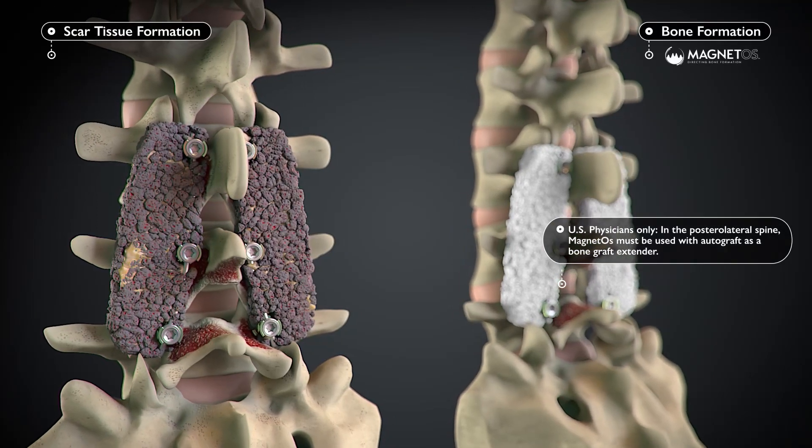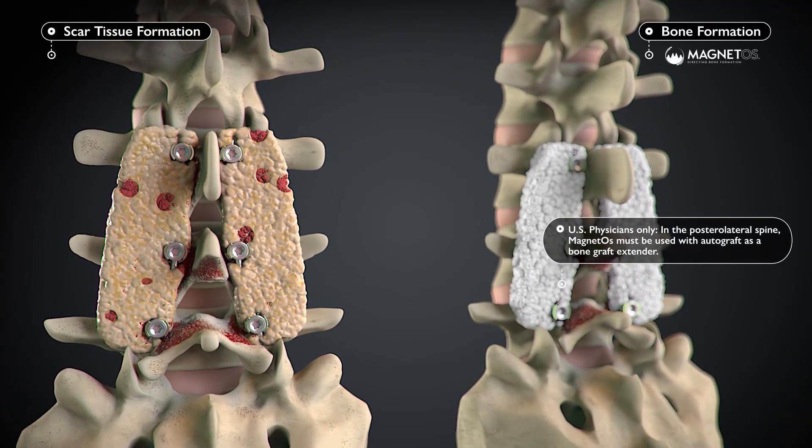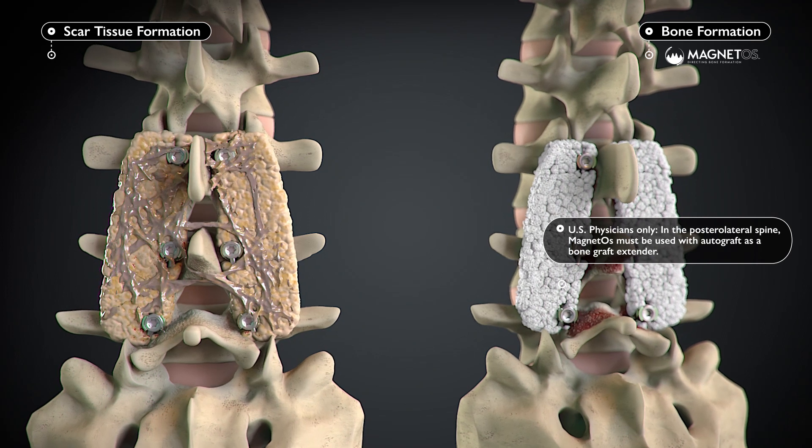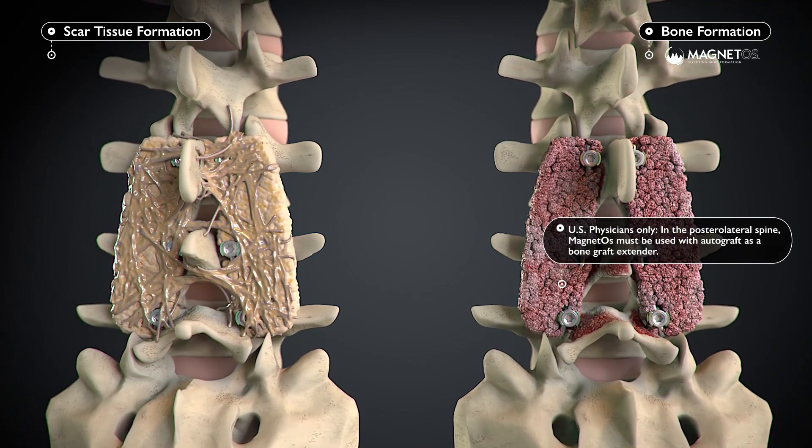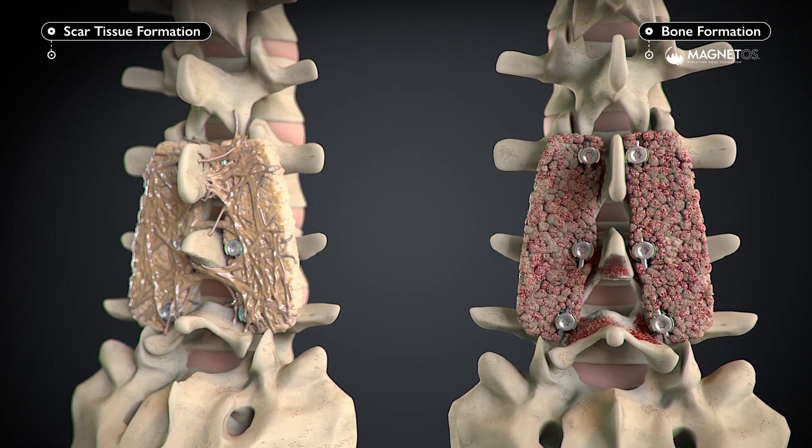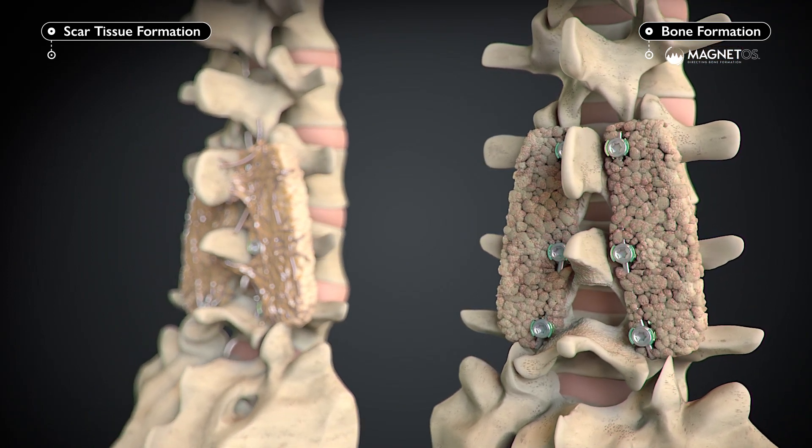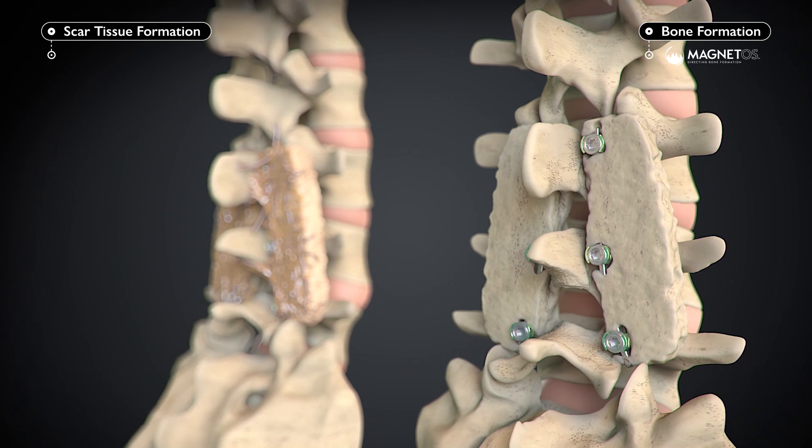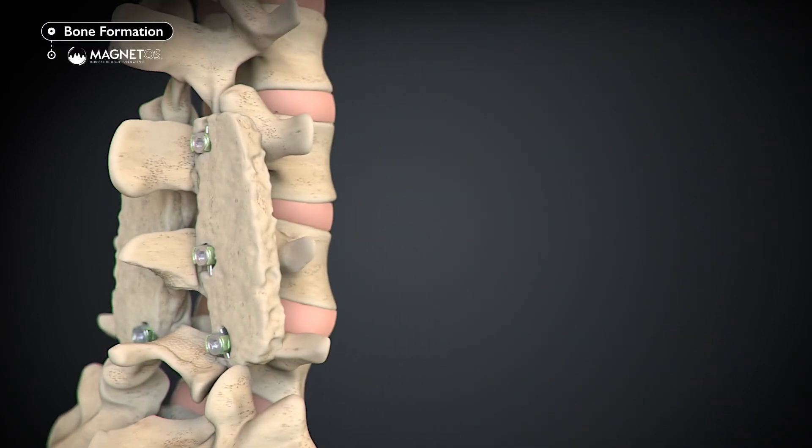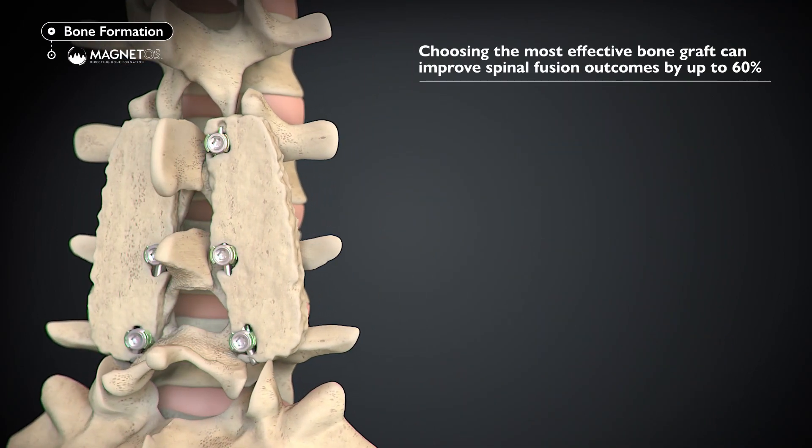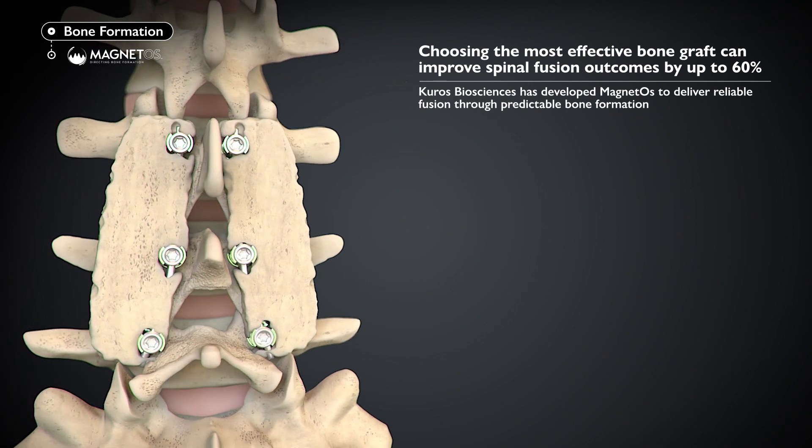Unlike conventional osteoconductive bone grafts for which there is a greater risk of fibrous tissue formation and scarring, bone formation takes place throughout Magnetos simultaneously without the need for added cells or growth factors, resulting in a uniform, solid, stable, and reliable fusion that is equivalent to the gold standard of autograft.